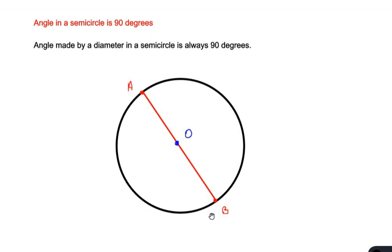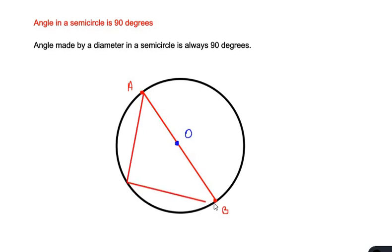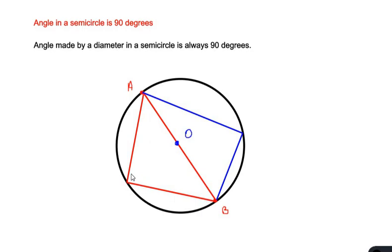We can see that AB is a line passing through the center, so AB becomes the diameter. According to the theorem, the angle made by the diameter in a semicircle is always 90 degrees. The diameter divides the circle into two halves, each called a semicircle, and every time the diameter makes an angle in the semicircle it is going to be 90 degrees.